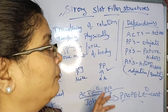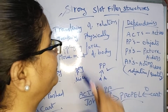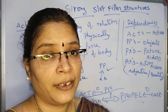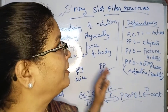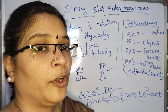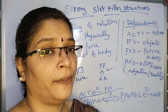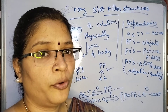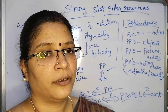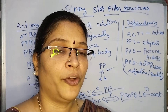In strong slot filler structures, whatever hard rules and hard relationships and events are happening can be easily represented by using this conceptual dependency. Another strong slot filler structure is Scripts, which is somewhat lesser in complexity than conceptual dependency, and CYC is also lesser complex. We will meet in another video regarding the strong slot filler structures such as scripts and CYC. Please subscribe to my channel, Intelligible Tutorials. Thank you.